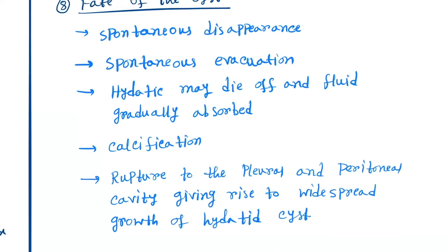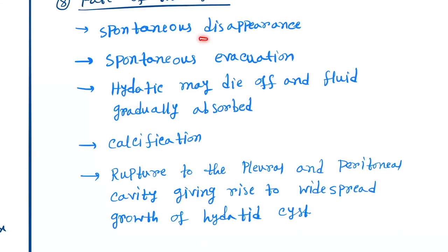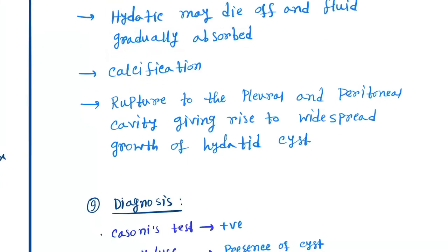Next point is about the fate of the cyst. Fate of the hydatid cyst is: spontaneously disappearance occurs, spontaneous evacuation will occur, hydatid cyst may die off and fluid gradually absorbed, calcification, or rupture of the pleural and peritoneal cavity giving rise to the widespread growth of the hydatid cyst.